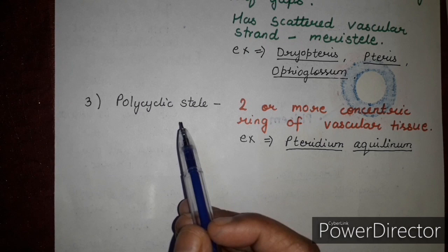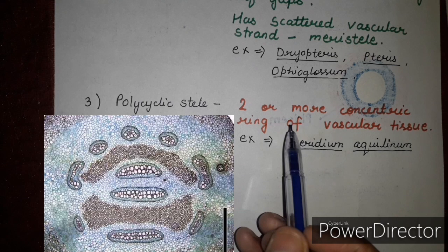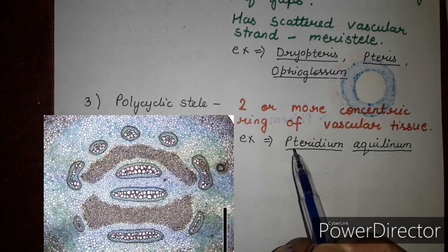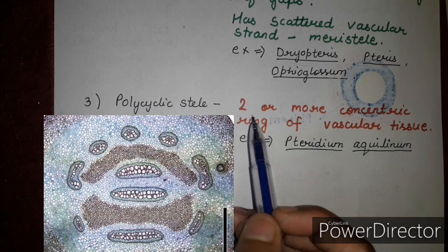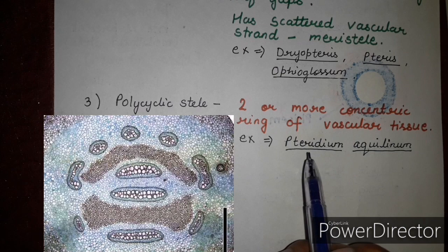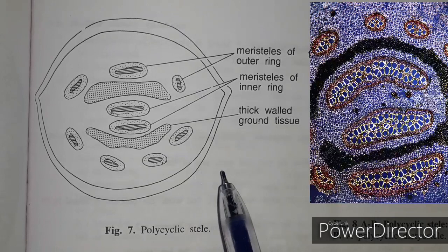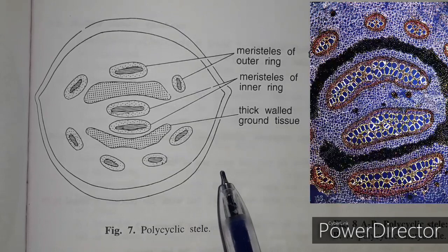The last modification of the siphonostele is the polycyclic stele. In this case, there are two or more concentric rings of vascular tissue. The example is Pteridium aquilinum.